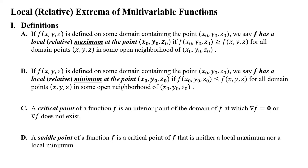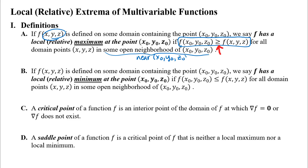A couple of vocabulary words here. I've written my definitions for functions of three variables. If you have more or less variables you just have more or less coordinates in these points, but otherwise the definitions are really the same. If I have a function defined on some domain containing a specific point (x₀, y₀, z₀), we say that f has a local or relative maximum at that point if f(x₀, y₀, z₀) is greater than or equal to all the other function outputs for all domain points in some open neighborhood — meaning near and all around that point on all sides.